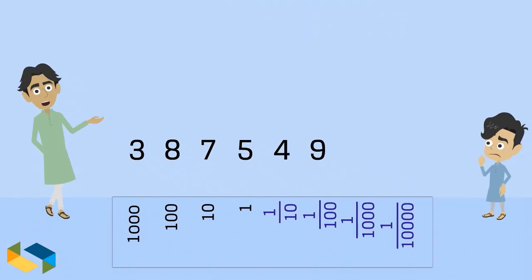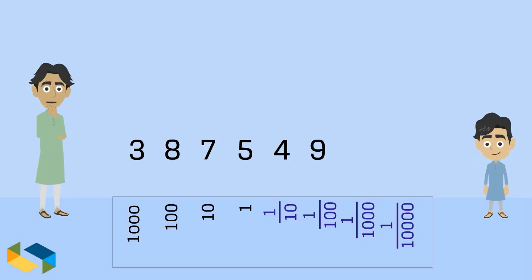It's impossible of course to keep writing the place value names always. We certainly need to find an easier way. That's where our decimal point comes in.